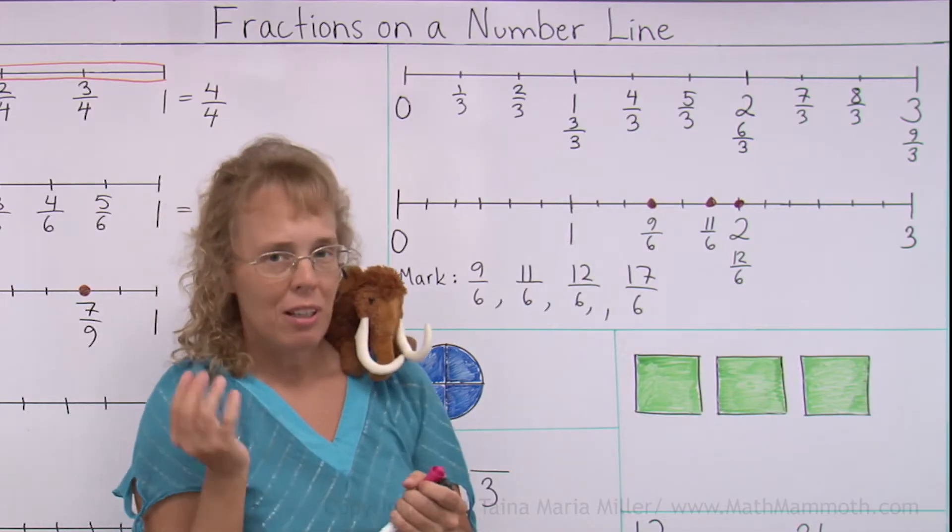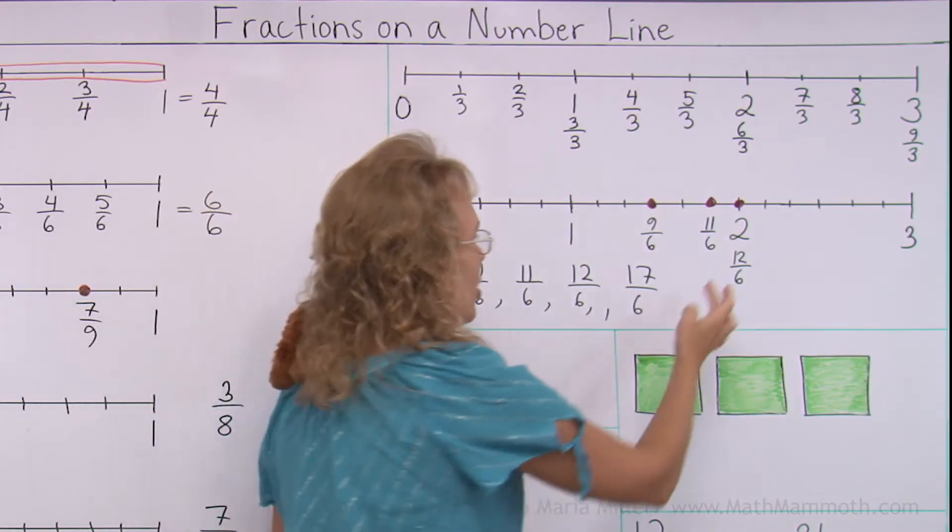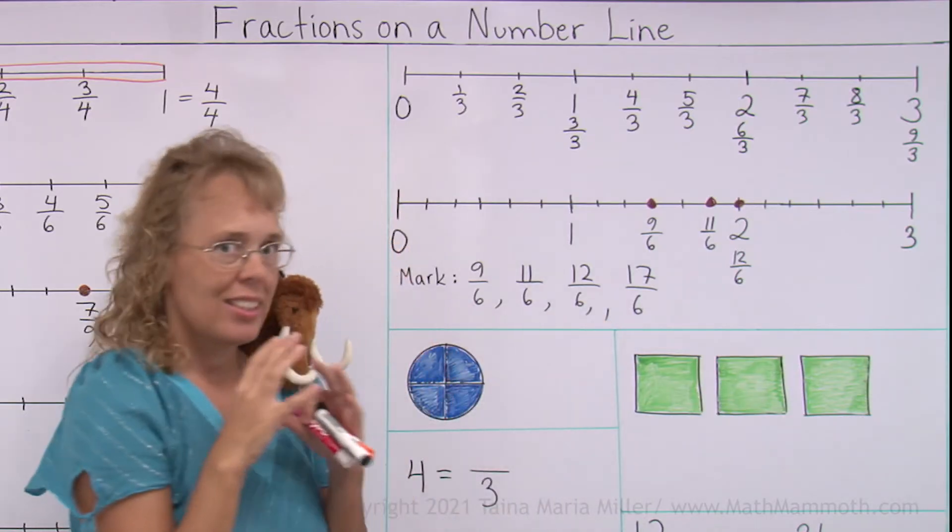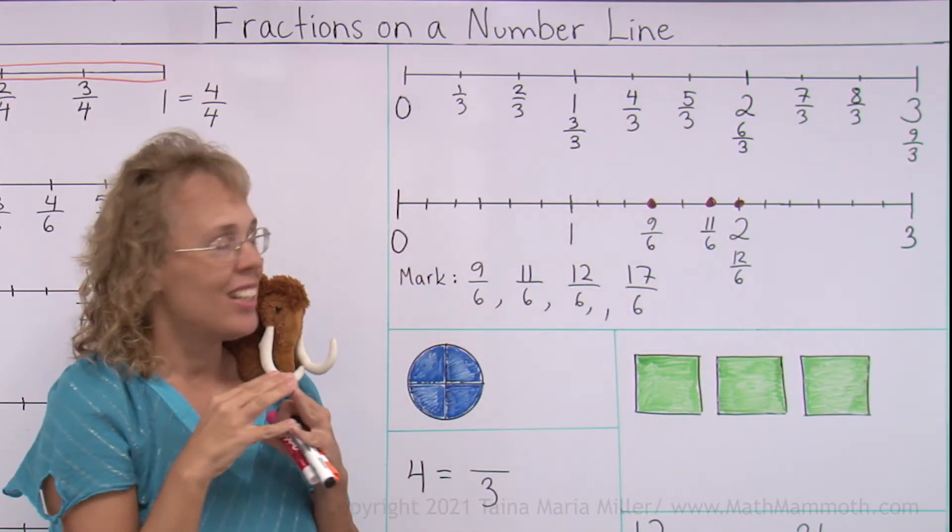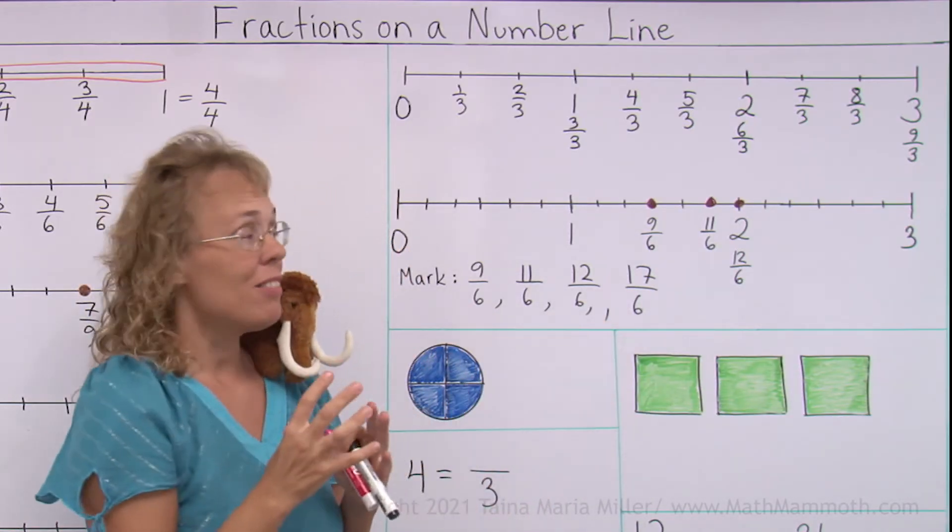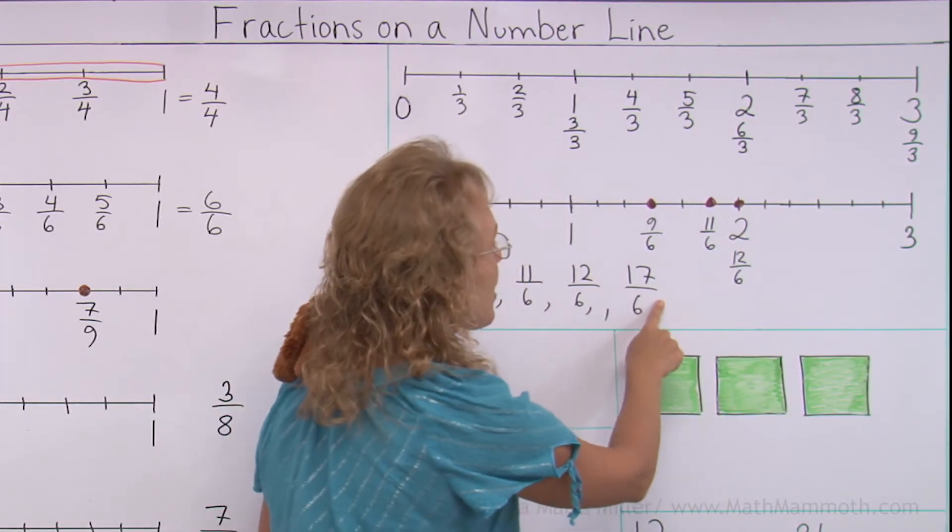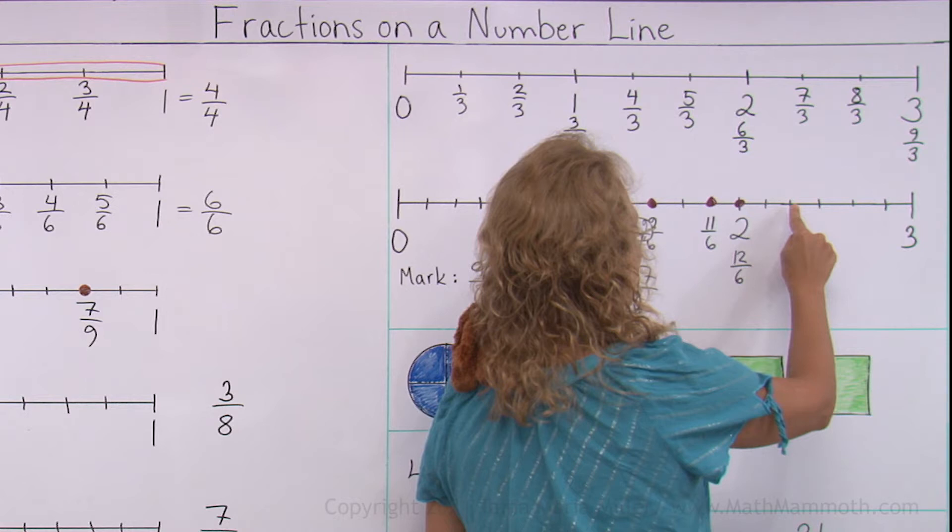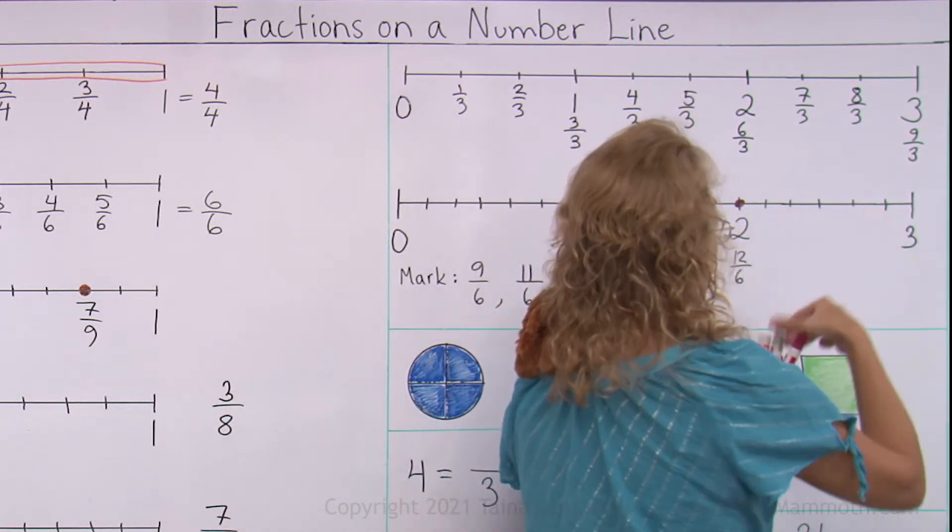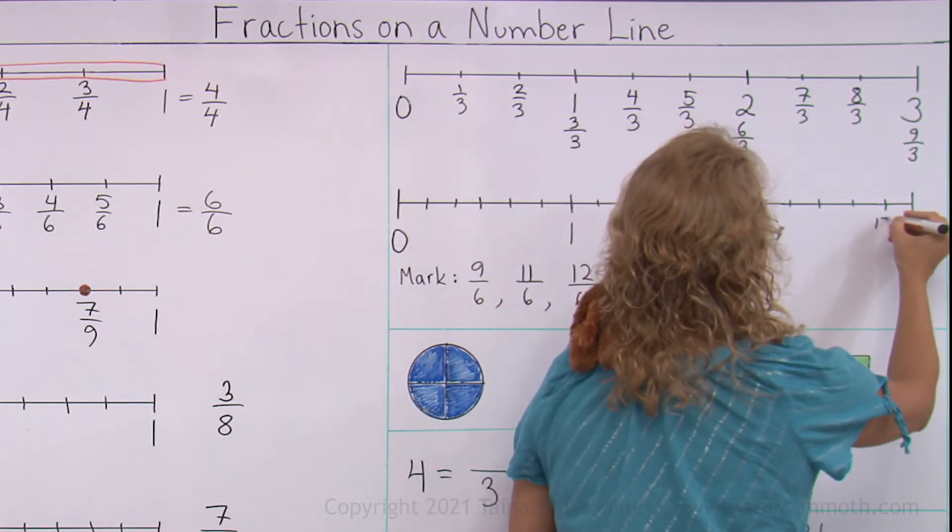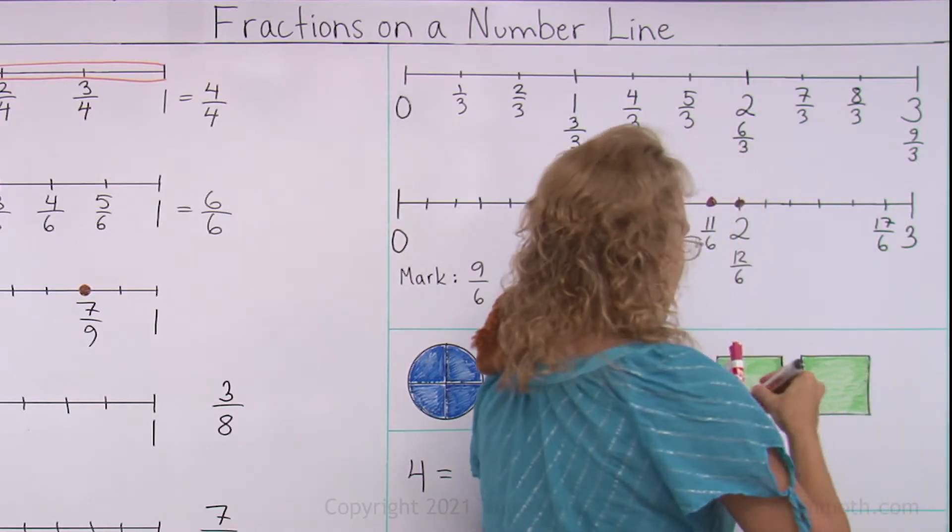And 12 sixths being 2, 2 wholes, it makes sense because remember, 6 sixths was 1. And so 6 and 6 is 12, so 12 sixths makes 2. And then 17 sixths, here's 12, 13, 14, 15, 16, 17. It is the last tick mark before 3.